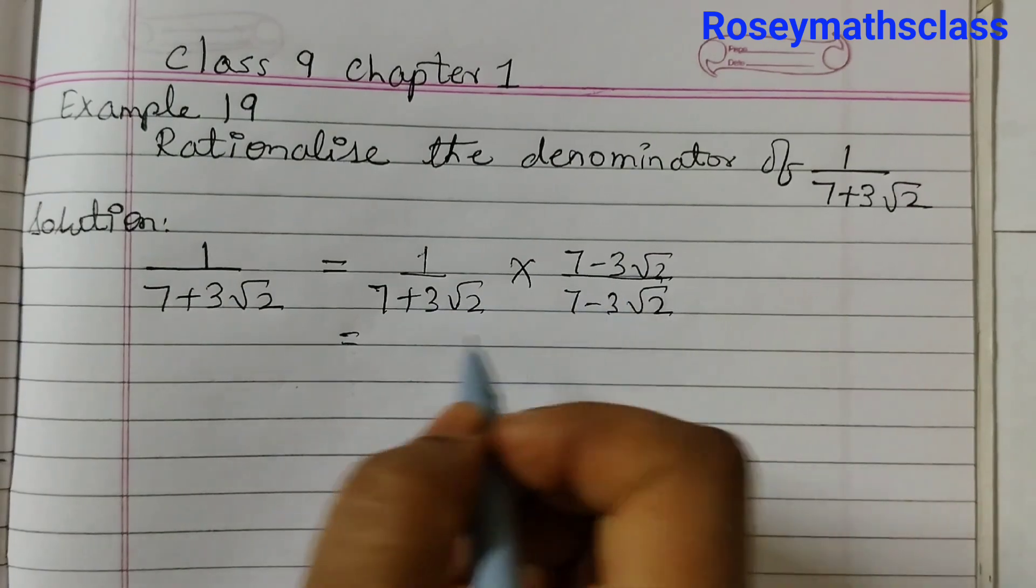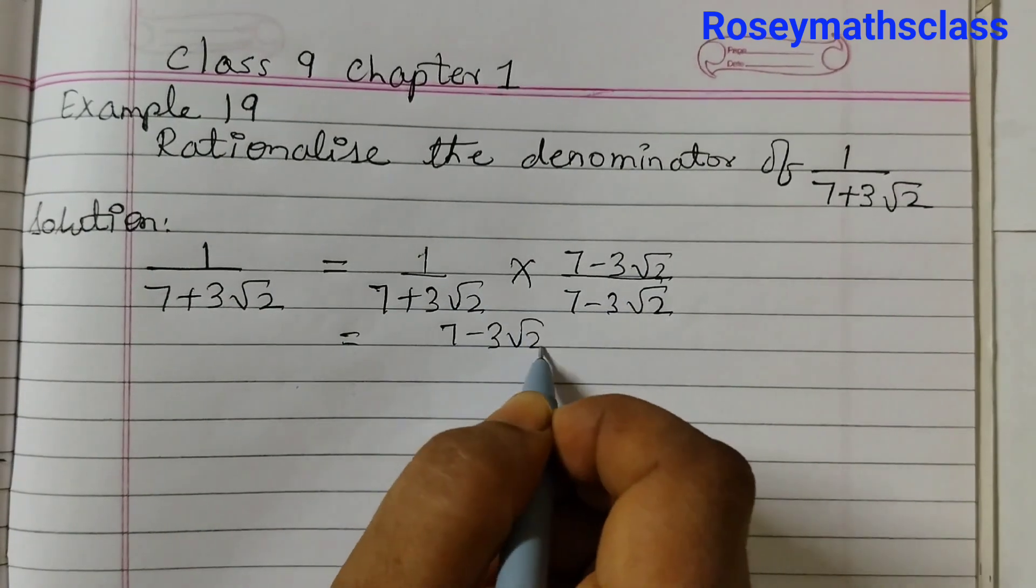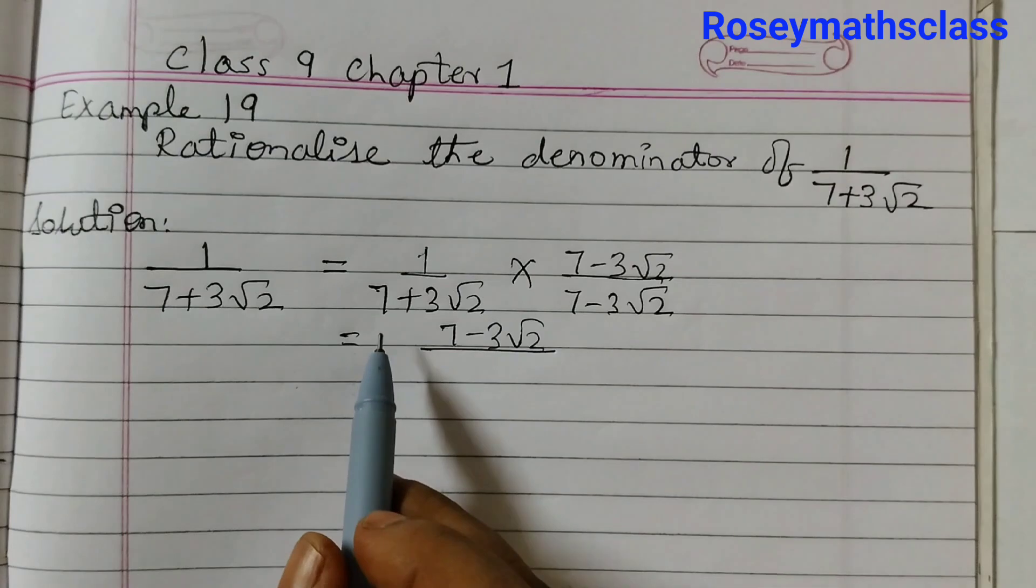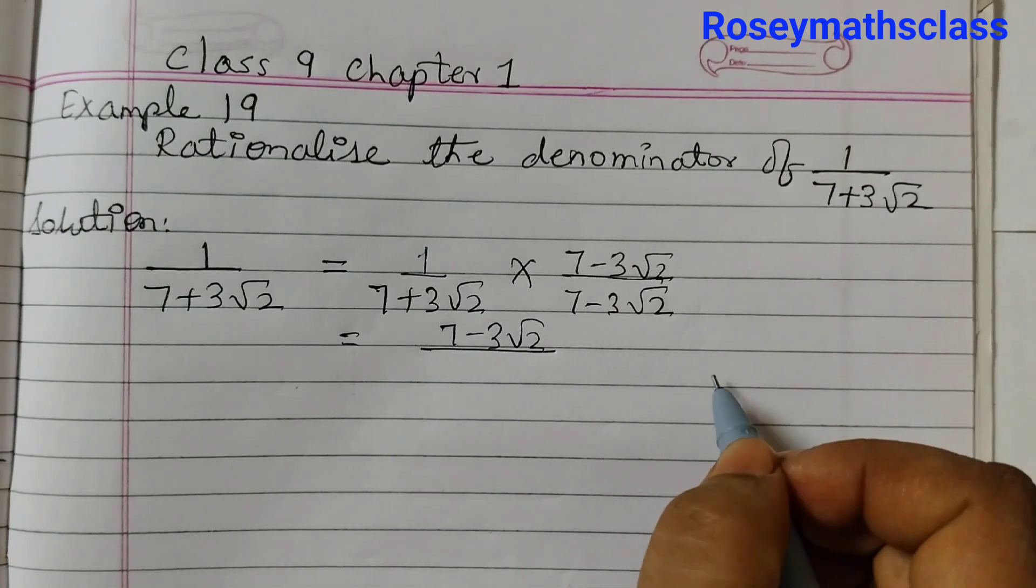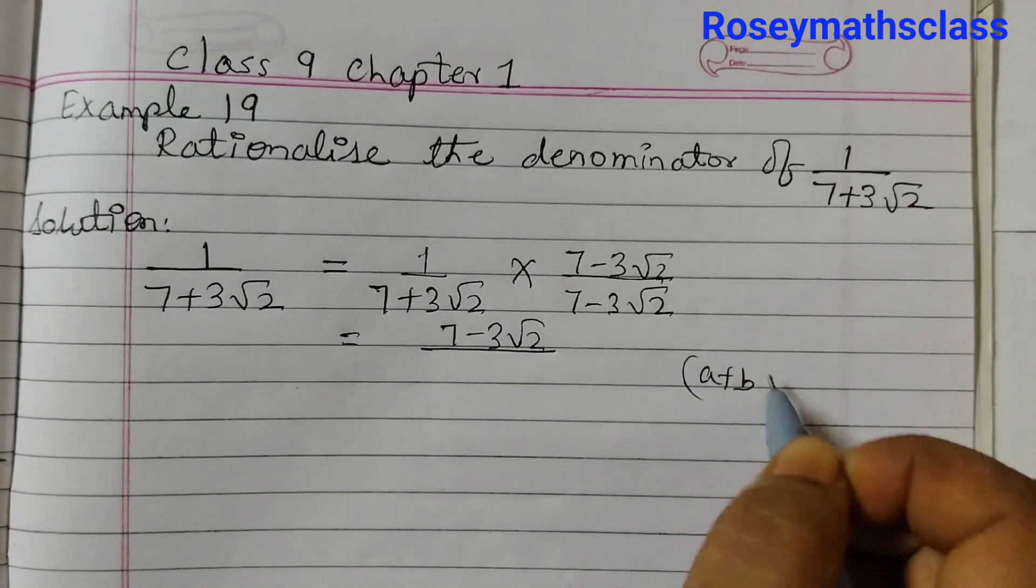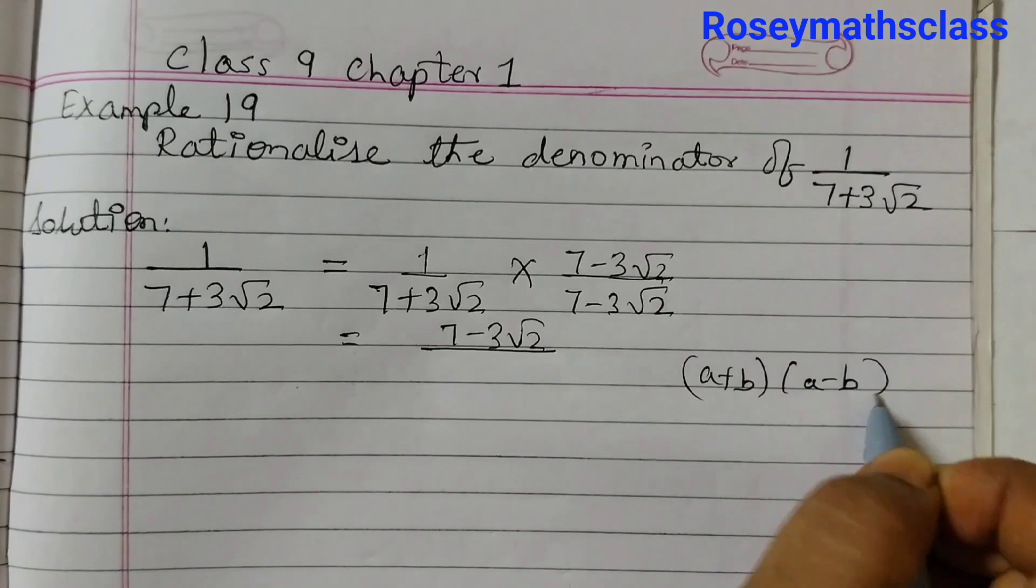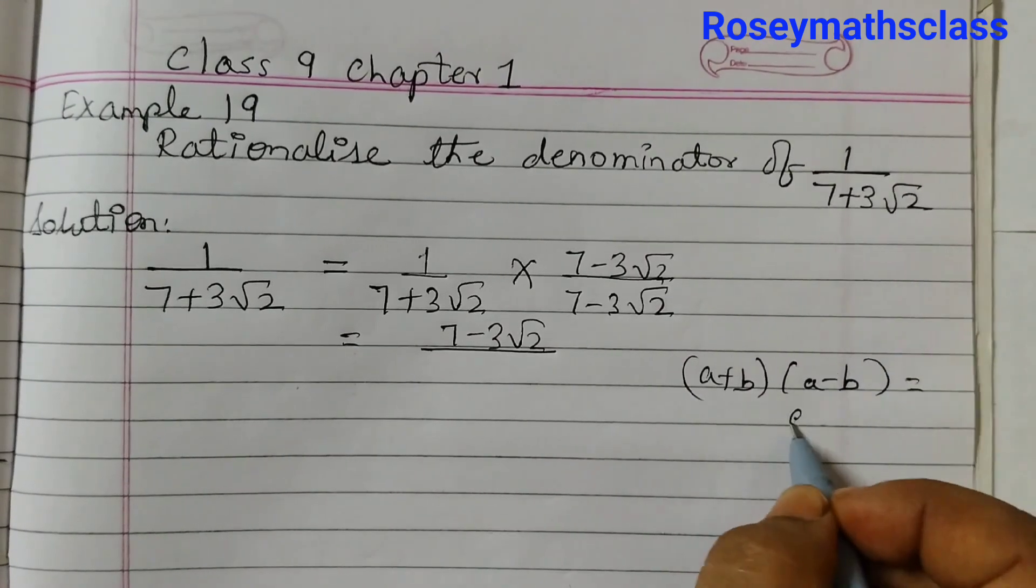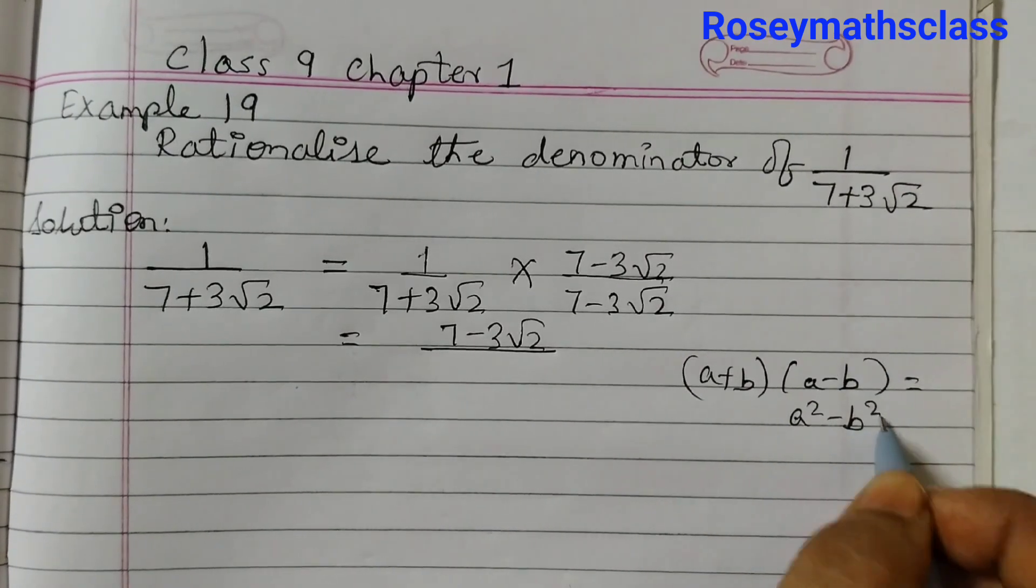1 into 7 minus 3 root 2 is 7 minus 3 root 2. For the denominator we will use the identity A plus B into A minus B equals to A squared minus B squared.